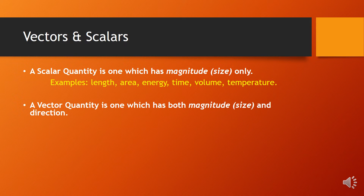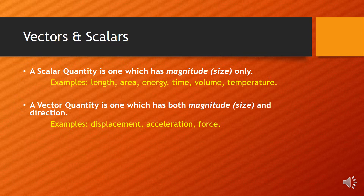A vector quantity is one which has both magnitude and also direction. Examples of these are displacement — where you can say in which direction the displacement takes place — acceleration, which could be up, down, forward, backwards, or specific directions, force, and others including velocity.